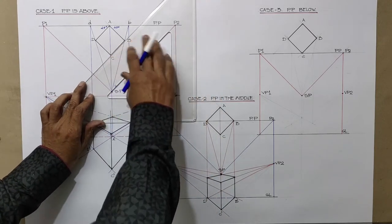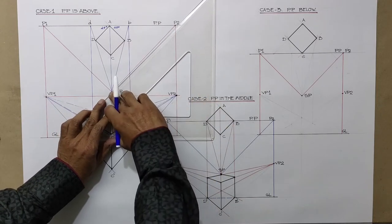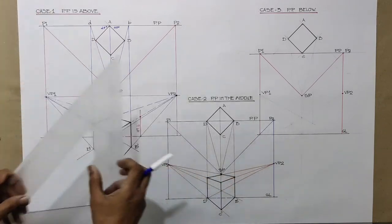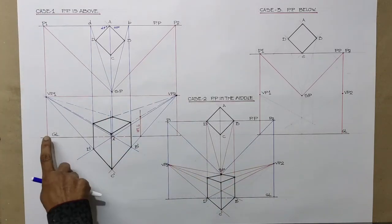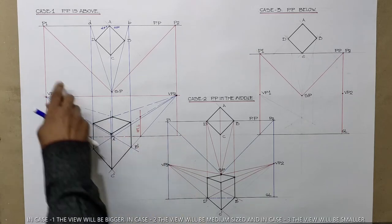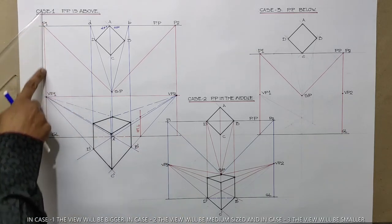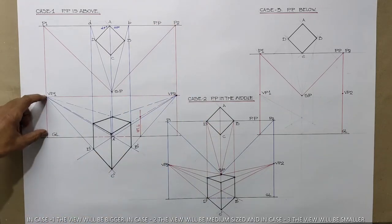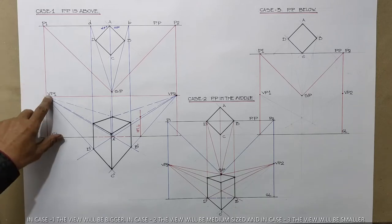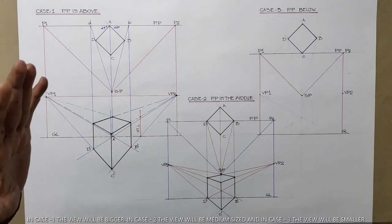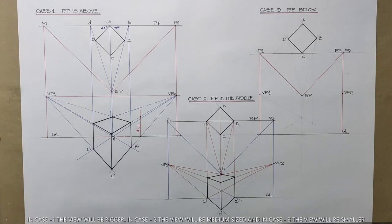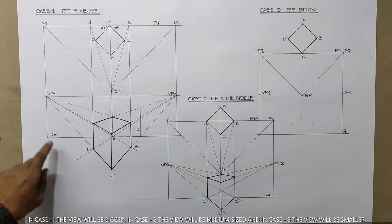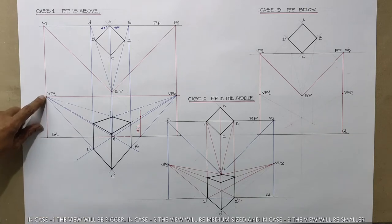Draw a parallel line from CB towards the right side from SP, so we get P2 and P1. Once that is over, we fix our ground line (GL). Once the ground line is fixed, we drop P1 onto the GL and P2 onto the GL. After that, the next step is fixing vanishing point 1 and vanishing point 2, which is also known as eye level. In this case I want a bird's eye view, so I have taken a taller eye level from the ground.